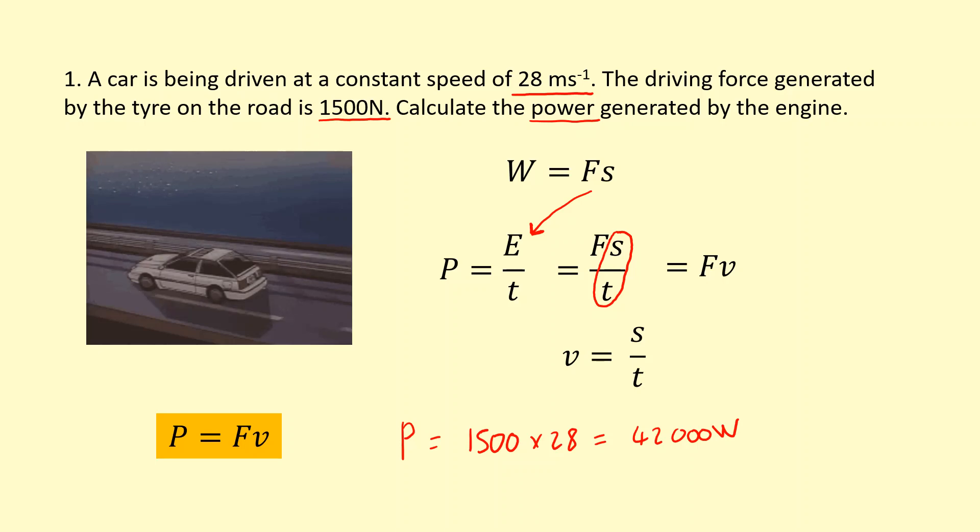If we assume the road is horizontal and the velocity is constant, so the kinetic energy isn't increasing, all that energy is being dissipated to the surrounding.